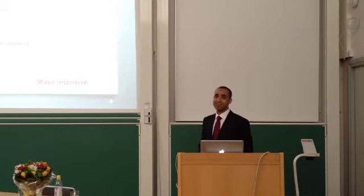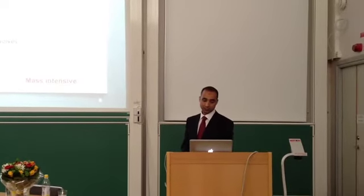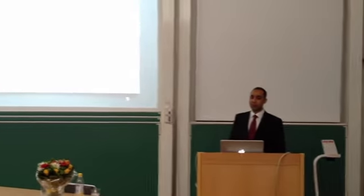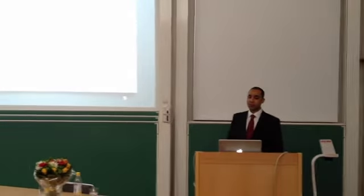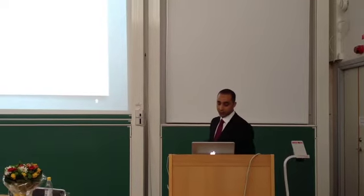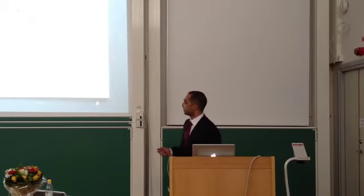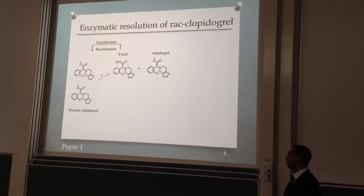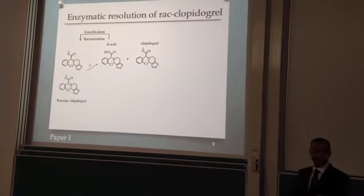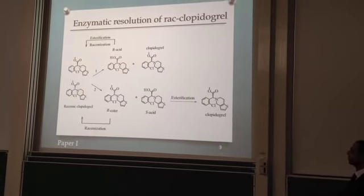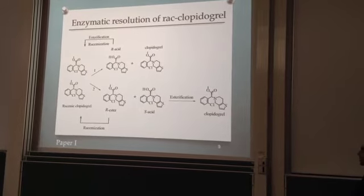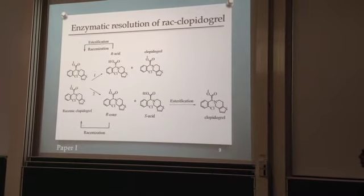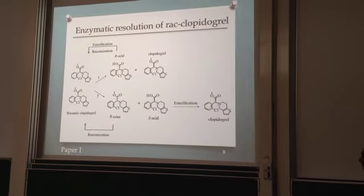However, this process is mass intensive. For the enzymatic resolution of racemic clopidogrel, two routes can be obtained. In the first route, selective hydrolysis produces R-acid and the broader S-clopidogrel ester, and for recycling, the R-acid has to be esterified and racemized. The other route produces R-ester and S-acid which needs esterification, and for recycling, the R-ester has to be racemized.